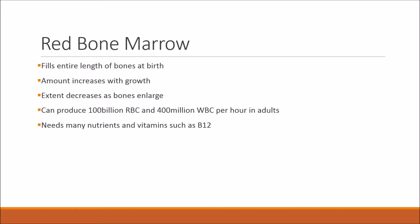Red bone marrow fills the entire length of bones when you're born. As you grow older the length it occupies in your bone decreases as the bones enlarge. To give a rough idea of how capable red bone marrow is: as an adult you can produce 100 billion red blood cells per hour and 400 million white blood cells per hour — a ridiculously high number. To do that you need many nutrients and vitamins, one of the main ones being B12.